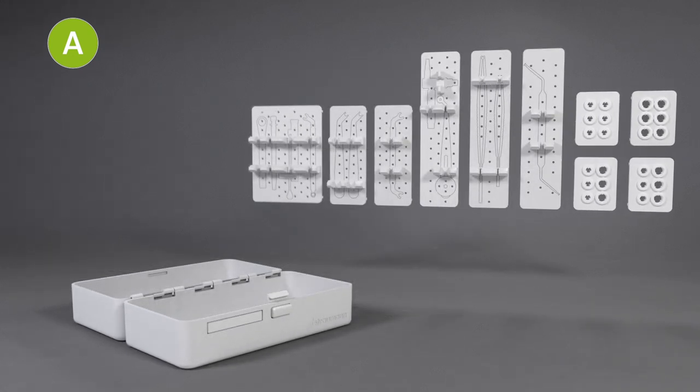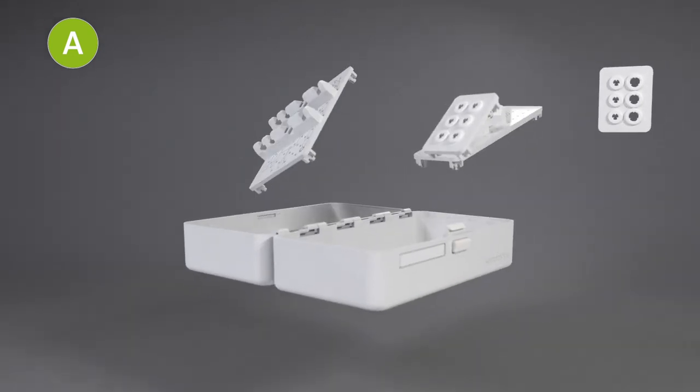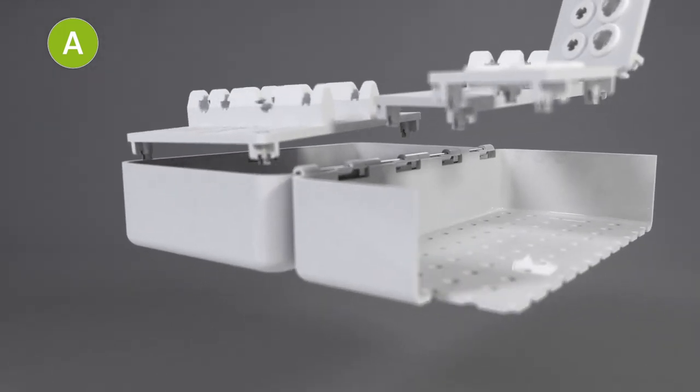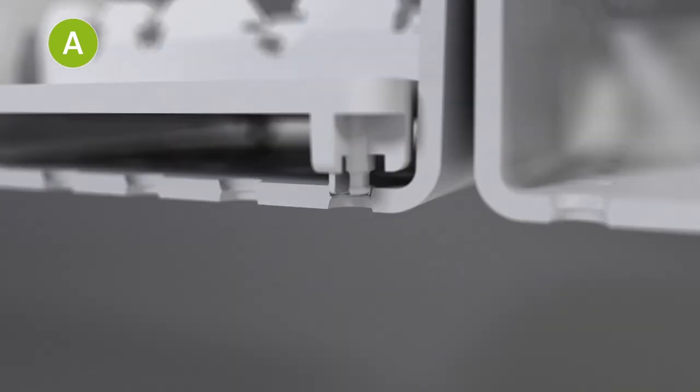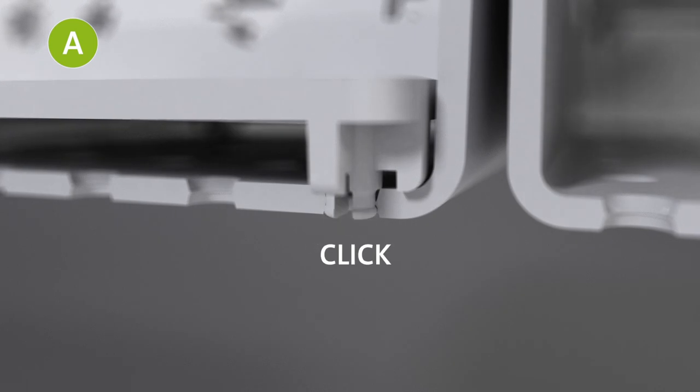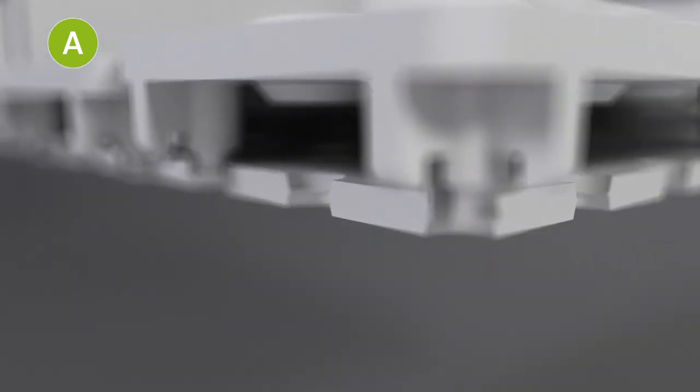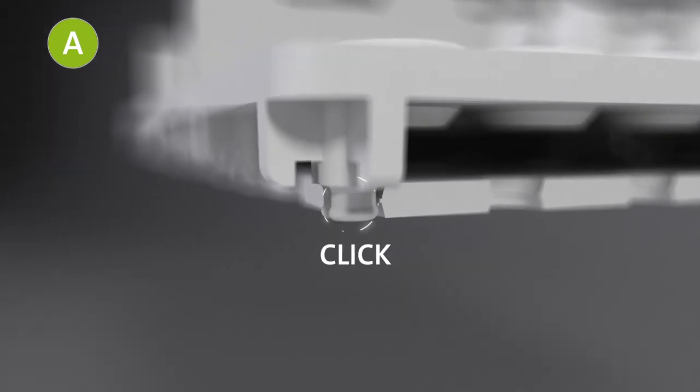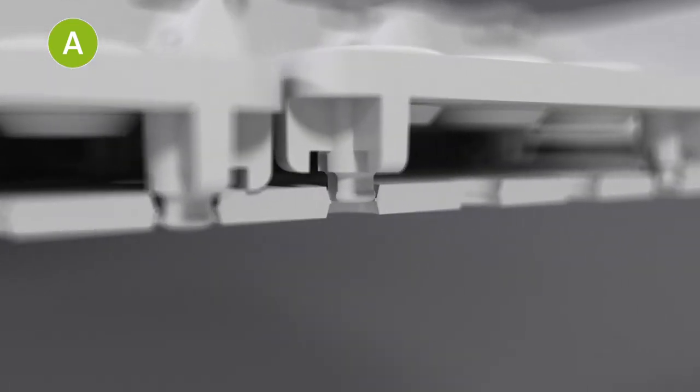Select trays according to the implant line and your personal preference. Click the trays into the A module. The grid of holes allows flexibility in placement. The trays are securely attached when you hear a clicking sound.